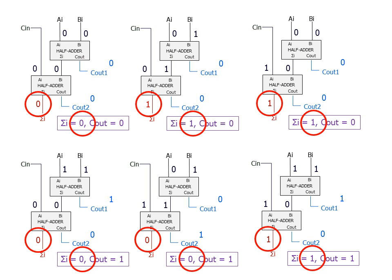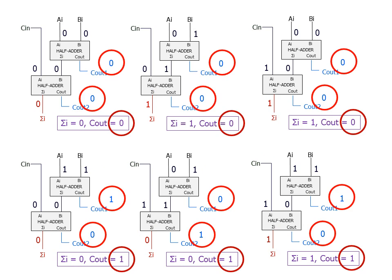In brief, we note that the sum output of the second half adder always corresponds to the required sum. Also, the required carry out is obtained if the carry out of either of the half adders is equal to one.